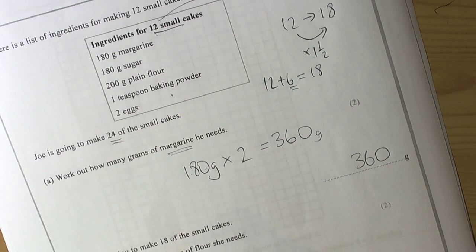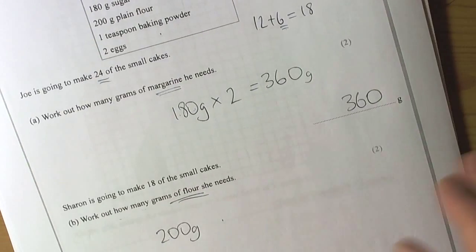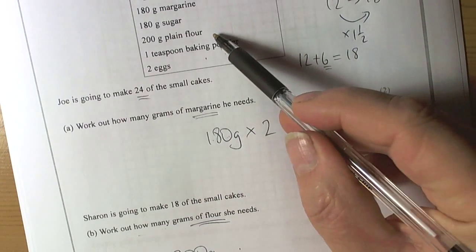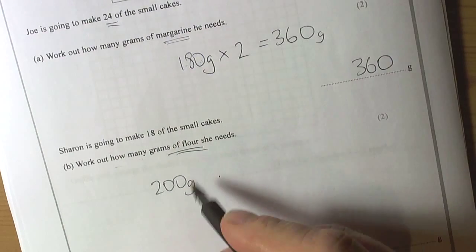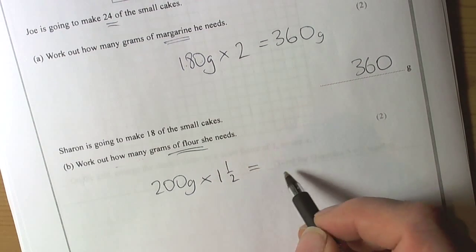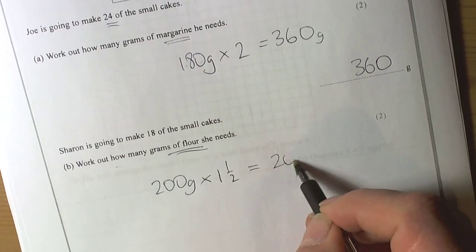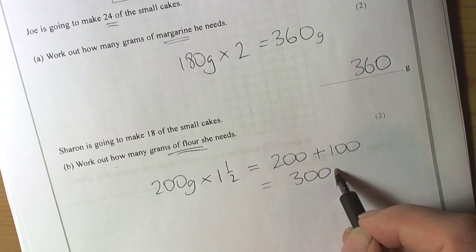This is about flour. So we had 200 grams of flour. So when we look at the recipe we had 200 grams of flour in the original recipe. And we want to multiply this by one and a half. And multiply by one and a half is take the number itself and add on half of it. So that is going to be 300 grams.